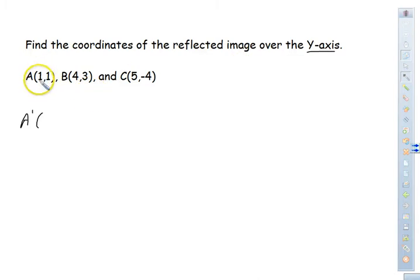So my first one, the x-coordinate, it's going to always be the opposite, since we're flipping over the y. So it's negative 1, 1. B prime is going to be opposite of the first number. So that's going to be negative 4. And then the 3, because the y is going to stay the same, because we're flipping it over that y-axis. And then C prime, that is going to be a negative 5. And then a negative 4 is going to stay the same.